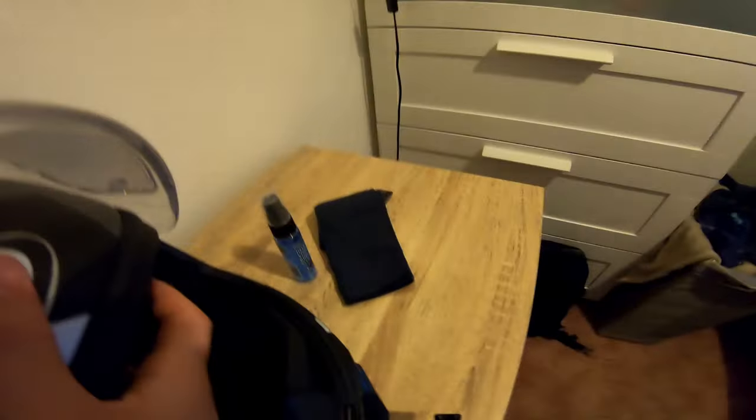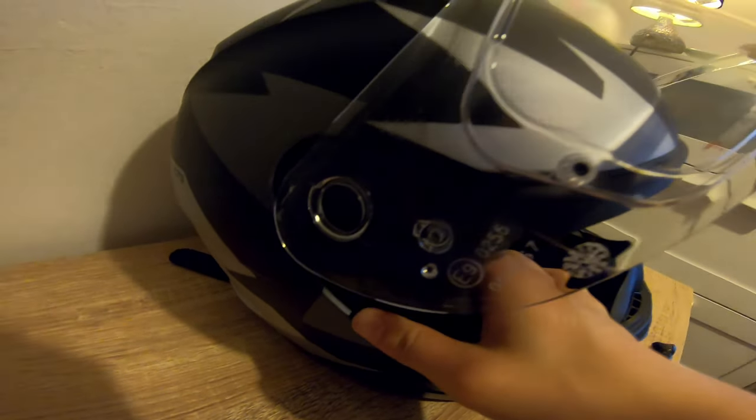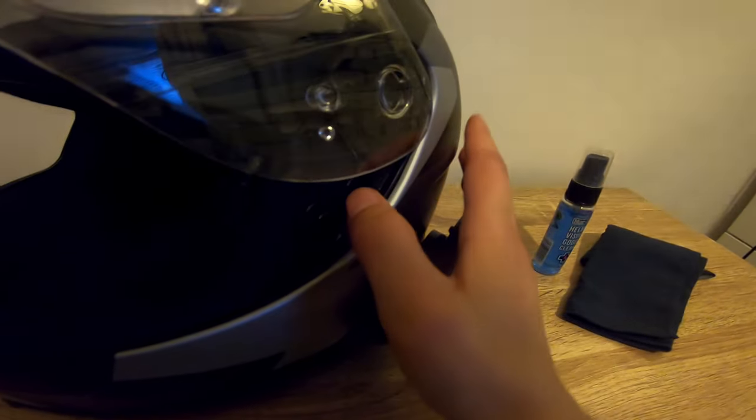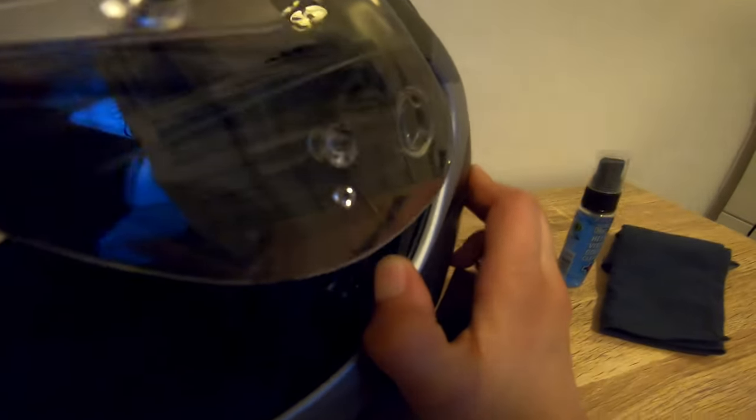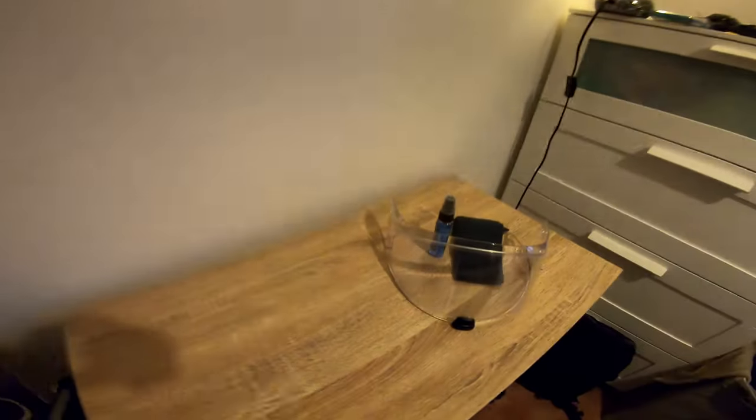On my HJC C70, you lift the visor all the way up and then it has these quick release clips that you just push and the visor pops out just like that. You can google how you get the visor off your helmet. Once that's done, just put it to one side and put the helmet away.